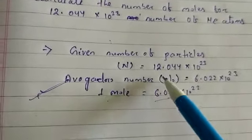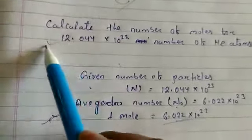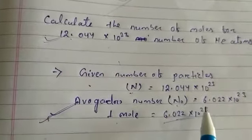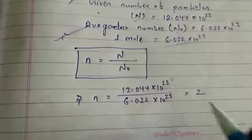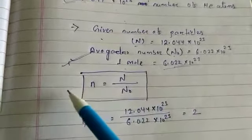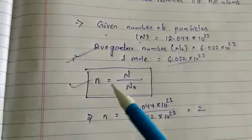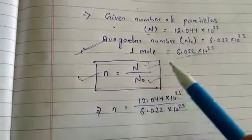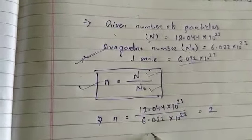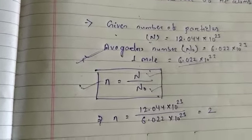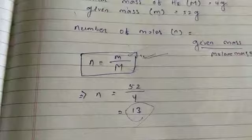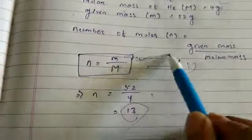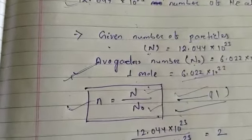Avogadro's number is denoted by N₀. The given number of particles in the question is capital N = 12.044 × 10²³. When particles are given, number of moles = N/N₀ (given number of particles divided by Avogadro's number). So you now know two formulas: how to find moles when masses are given, and how to find moles when number of particles are given.